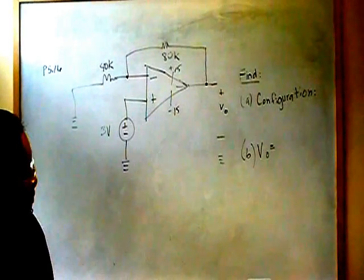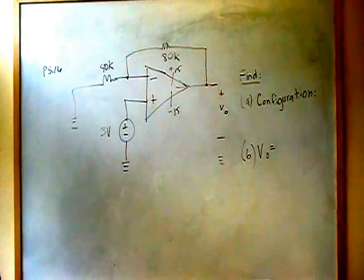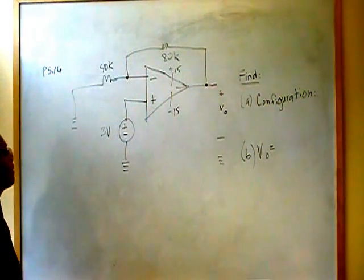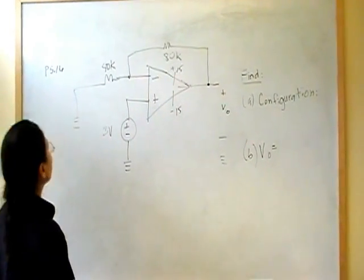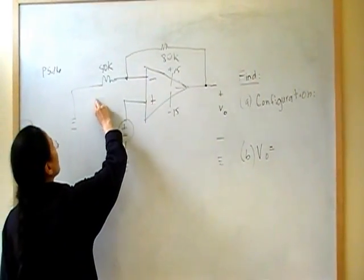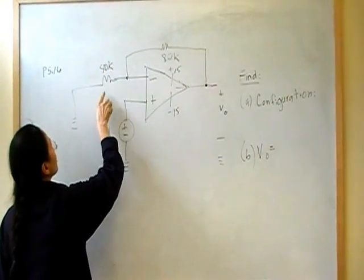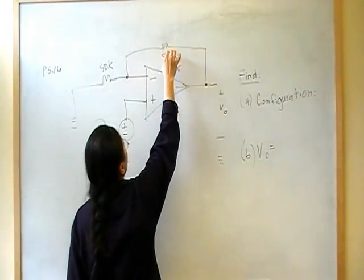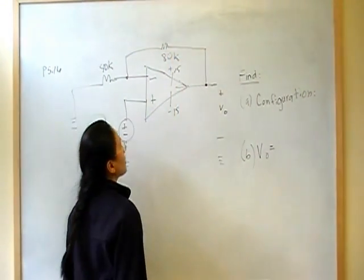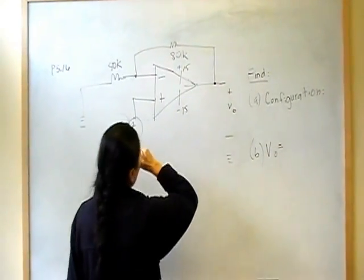Okay, so this is problem number 16 from Chapter 5 on op amps. We have a 40-kilo-ohm resistor here, an 80-kilo-ohm resistor for the feedback resistor, and this is your V-out, like usual.